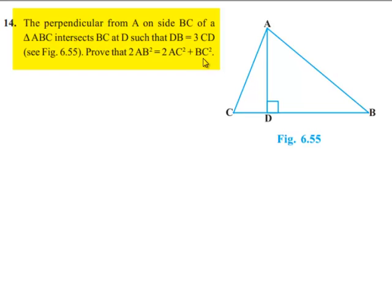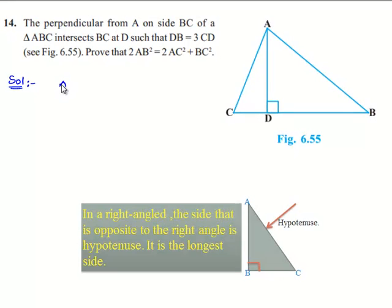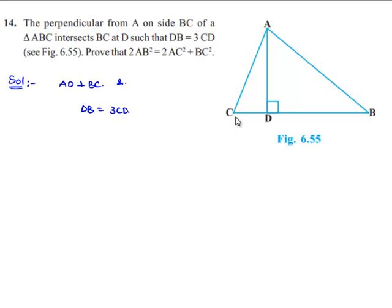Now moving on to the solution. It is given that AD is perpendicular to BC and DB is equal to 3 times CD. We know that base BC is consisting of CD and DB.